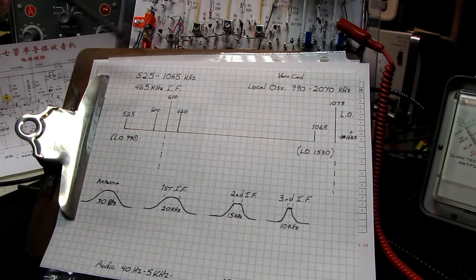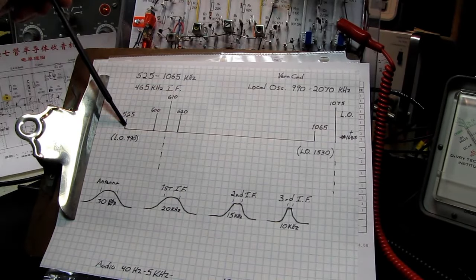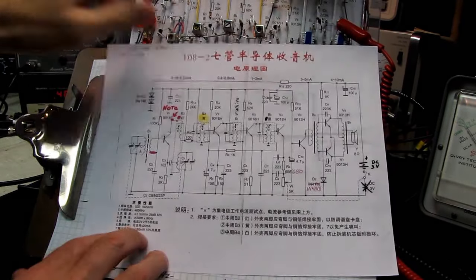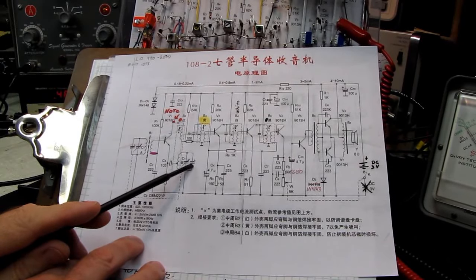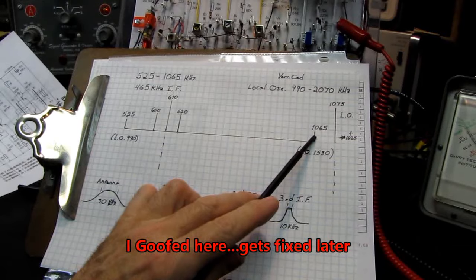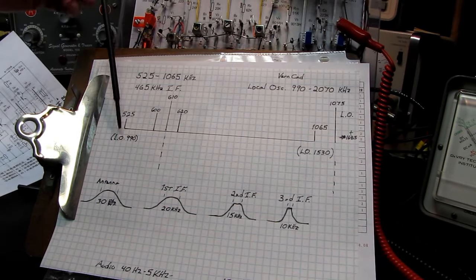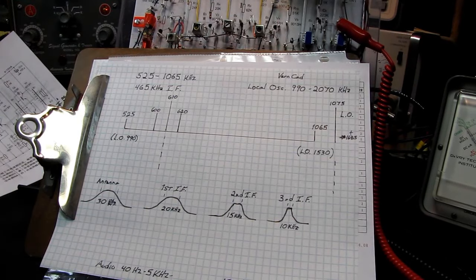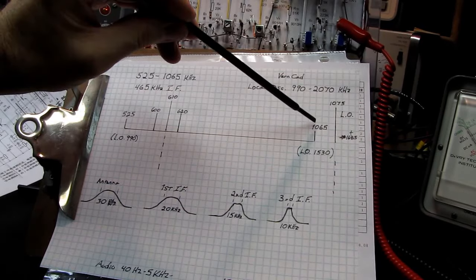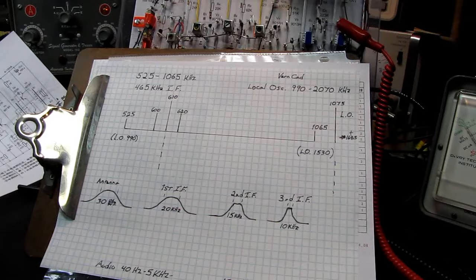So what we have to do is adjust our local oscillator after the IF is done so that we can tune down to 525 kilohertz by producing a local oscillator of 990 kilohertz. Then we'll swing to the top end of the band and we'll adjust this trimmer capacitor on the high frequency end so that we can get our local oscillator to 1530 kilohertz so we can receive 1065. Remember, 465 kilohertz IF offset. And when all is said and done, when I tune to the 525 portion with my signal generator, I should be able to receive 525. The local oscillator should be at 990. Turn my signal generator up to 1065. My local oscillator should be at 1530 and I should be able to receive or hear the 1065 signal here. So let's get on with it.